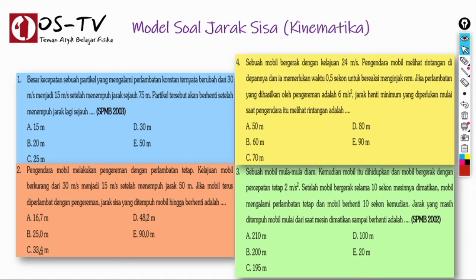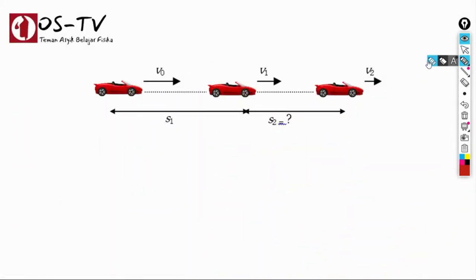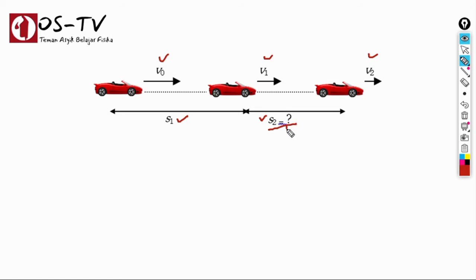Biasanya soal kinematika tentang jarak sisa menggambarkan kasus benda yang sedang bergerak dengan kecepatan tertentu, misalnya V0. Karena kondisi tertentu, benda tersebut berkurang kecepatannya menjadi V1 dan kemudian menjadi V2 dengan perlambatan yang konstan. Di sini kita lihat bahwa sebuah benda — dalam hal ini digambarkan mobil — bergerak mula-mula dengan kecepatan V0, kemudian kecepatannya berubah menjadi V1 dan V2. Ketika bergerak dengan kecepatan V0 hingga V1, jarak yang ditempuh benda adalah S1, sementara S2 adalah jarak sisa.